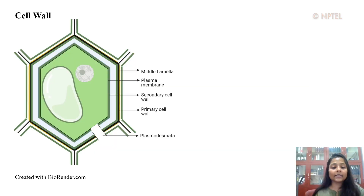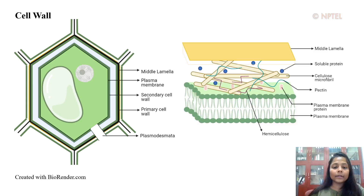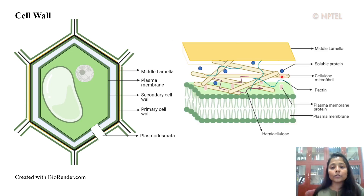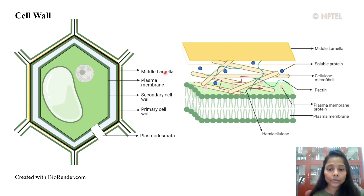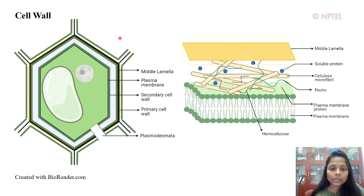The cell wall is an extracellular matrix which, in the case of plant cells, can be divided into different layers. The first one is the middle lamella, highlighted here in yellow. The middle lamella is composed of magnesium and calcium pectate, and this is the layer which is first deposited during cell division. Middle lamella is a glue-like structure that adheres two adjacent plant cells.